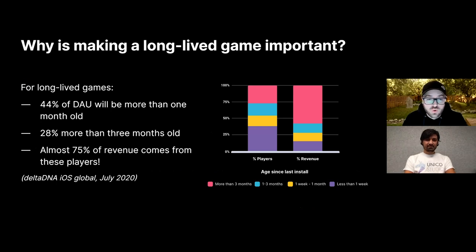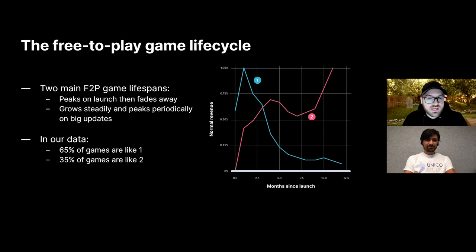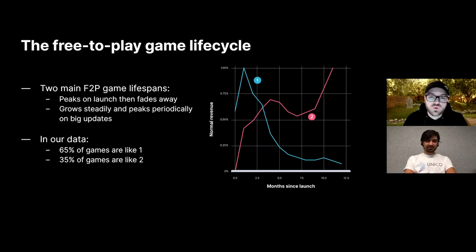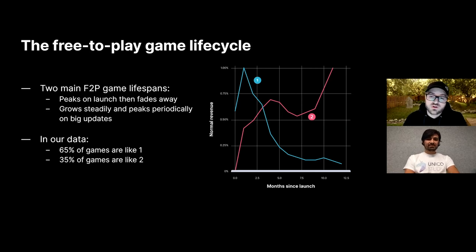Looking at the Delta DNA stats for long-lived games — globally on iOS — we've seen over 70% of revenue come from players who are over one month old. That means the best games are nurturing their players for months to build up their value. Traditionally, if you're talking premium box games or studios that make one game and then move on to the next, they're peaking revenue on launch and then tailing off after a few months. We've seen similar trends in free-to-play, where all the effort and money is put into launch and the studio never really recovers.